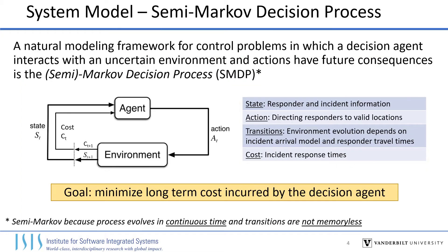A natural mathematical framework for modeling control problems with inherent uncertainty is the Markov decision process, in which a decision agent attempts to minimize its long-term cost while interacting with an uncertain environment. Here our environment captures the state of responders and incidents as they evolve over time, while our decision agent can reallocate responders in order to minimize long-term response times. It's important to note that this is actually a semi-Markov process, since it evolves in continuous time and transitions are not memoryless.